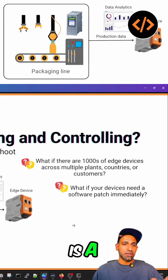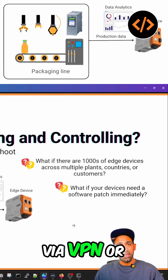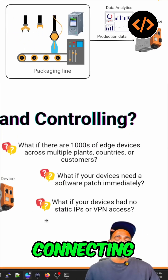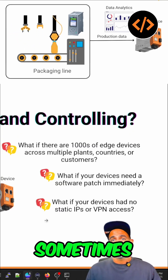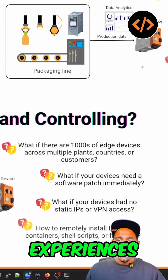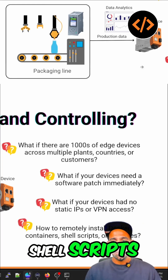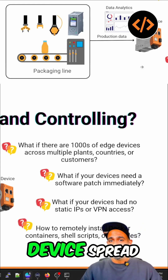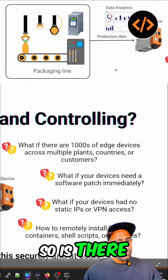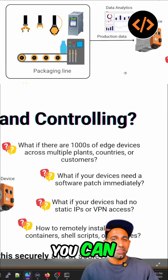We know that there is a possibility to connect to the device via VPN or static IPs. But what if your device has no static IPs? Connecting via VPN sometimes is a big headache — I'm talking from experience. And what if you need to install some Docker containers, shell scripts and flow files on your Edge device spread across multiple locations? So is there any solution for that? Any quick solution that you can think of?